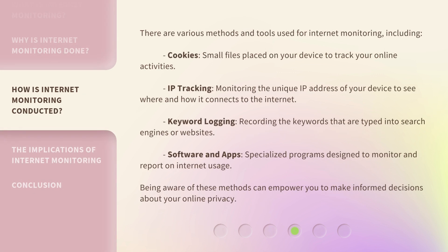There are various methods and tools used for internet monitoring, including cookies — small files placed on your device to track your online activities — IP tracking, monitoring the unique IP address of your device to see where and how it connects to the internet, keyword logging, recording the keywords that are typed into search engines or websites, and specialized software and apps designed to monitor and report on internet usage. Being aware of these methods can empower you to make informed decisions about your online privacy.